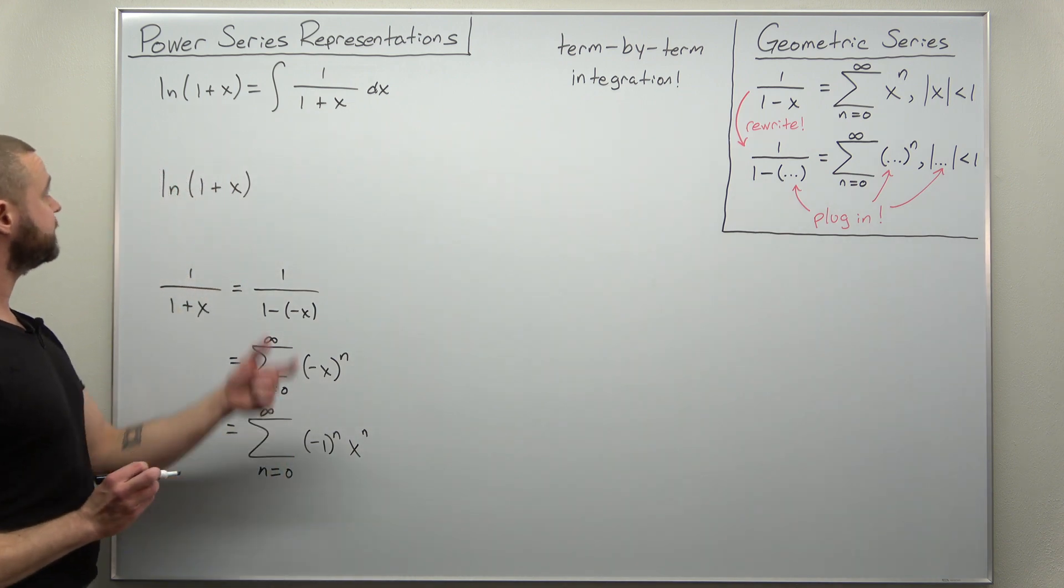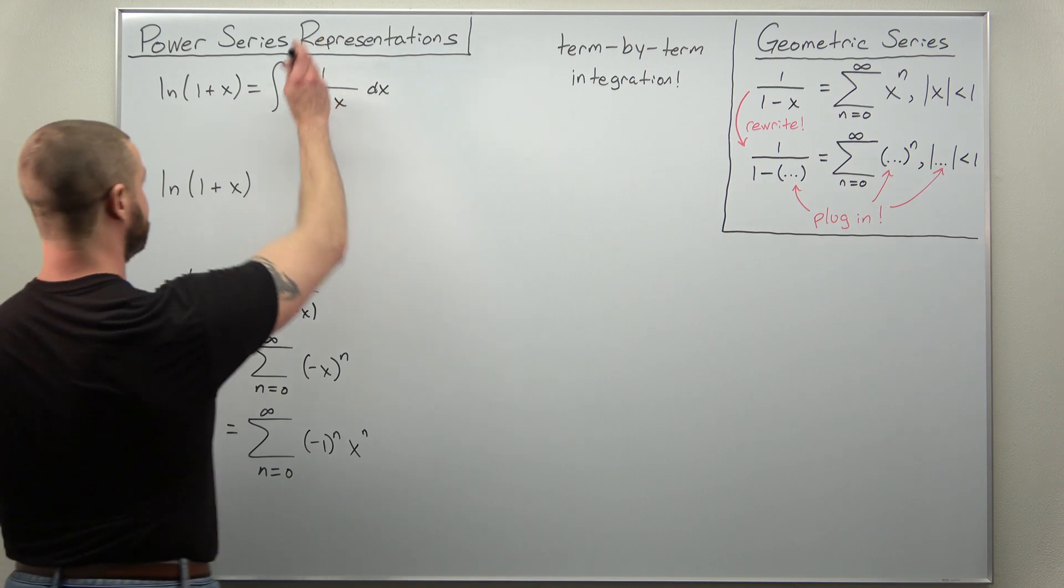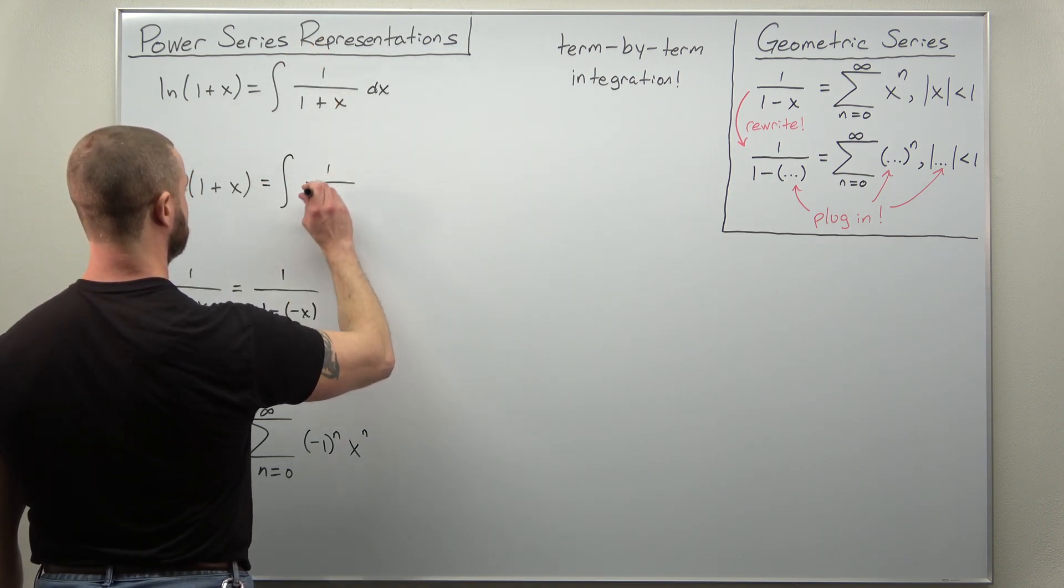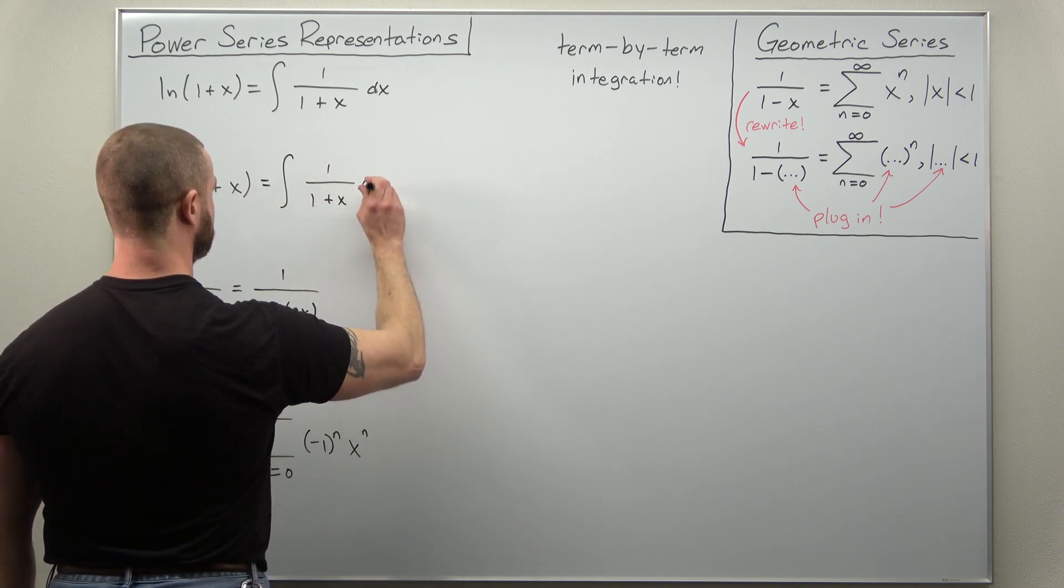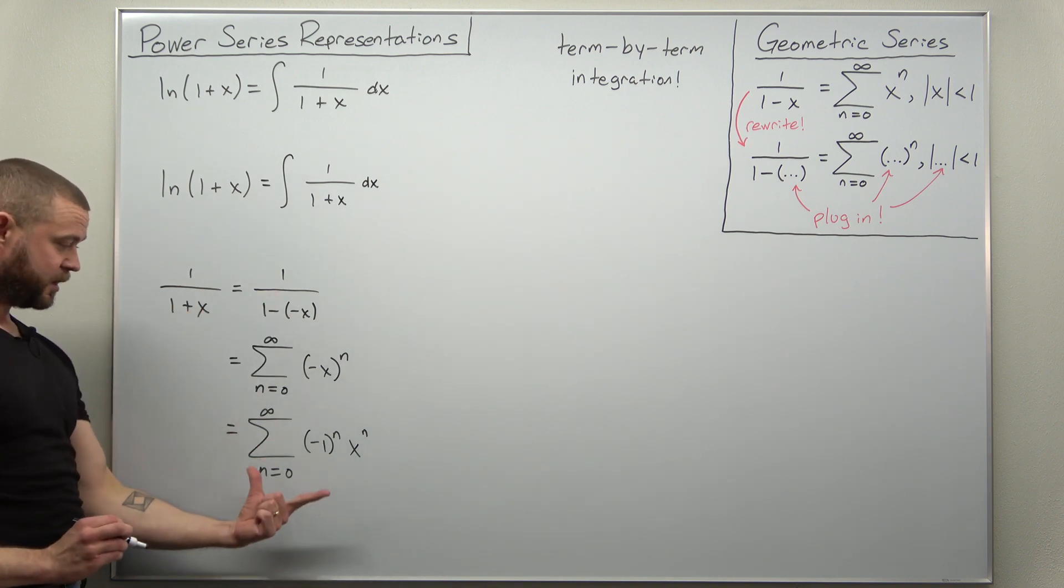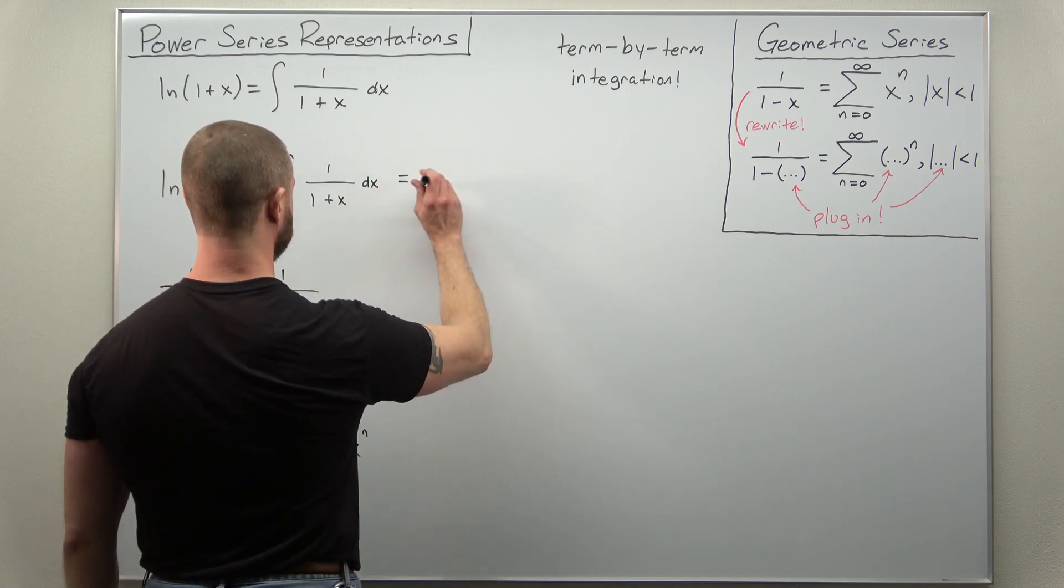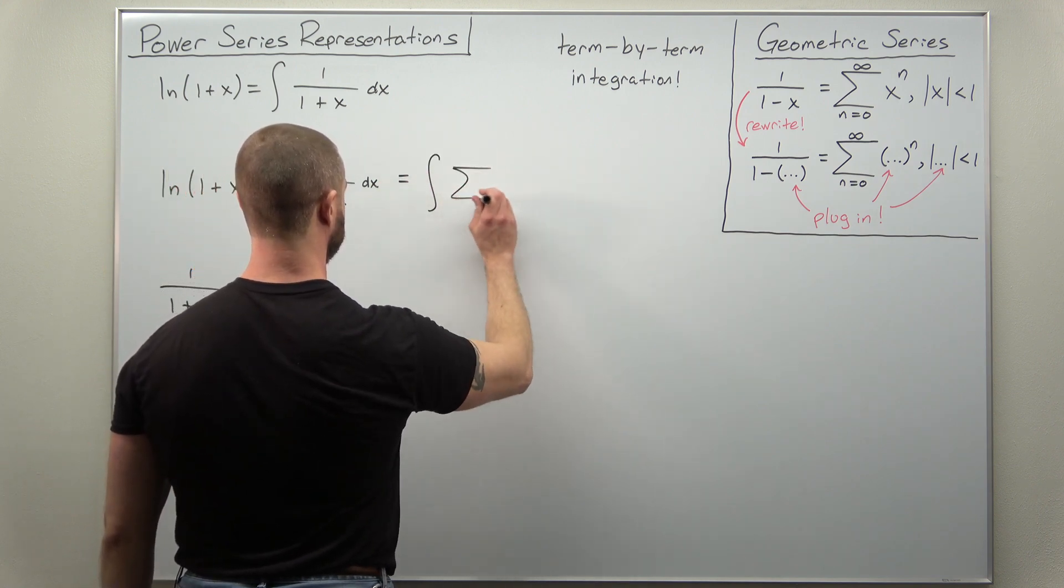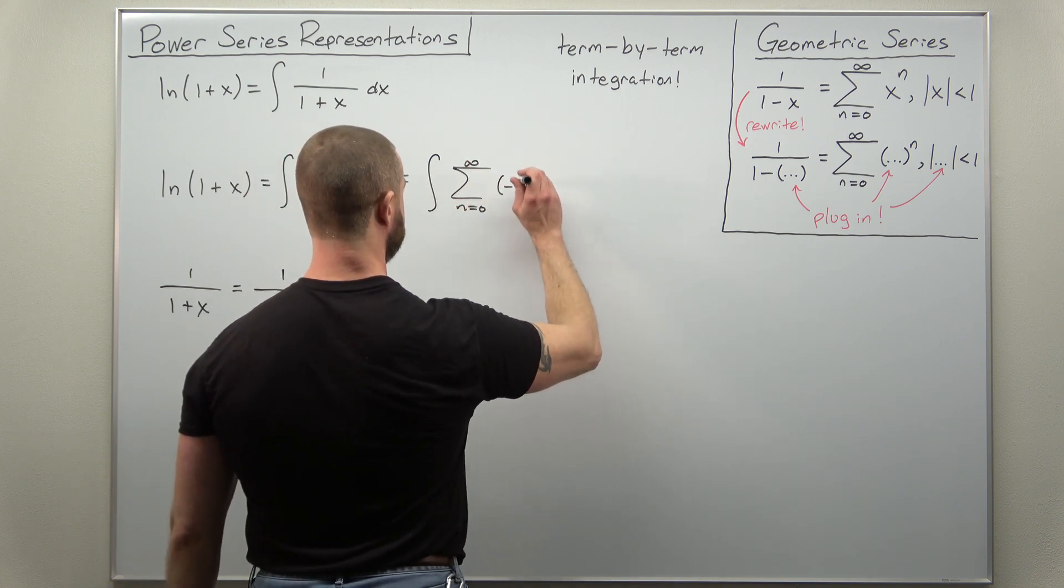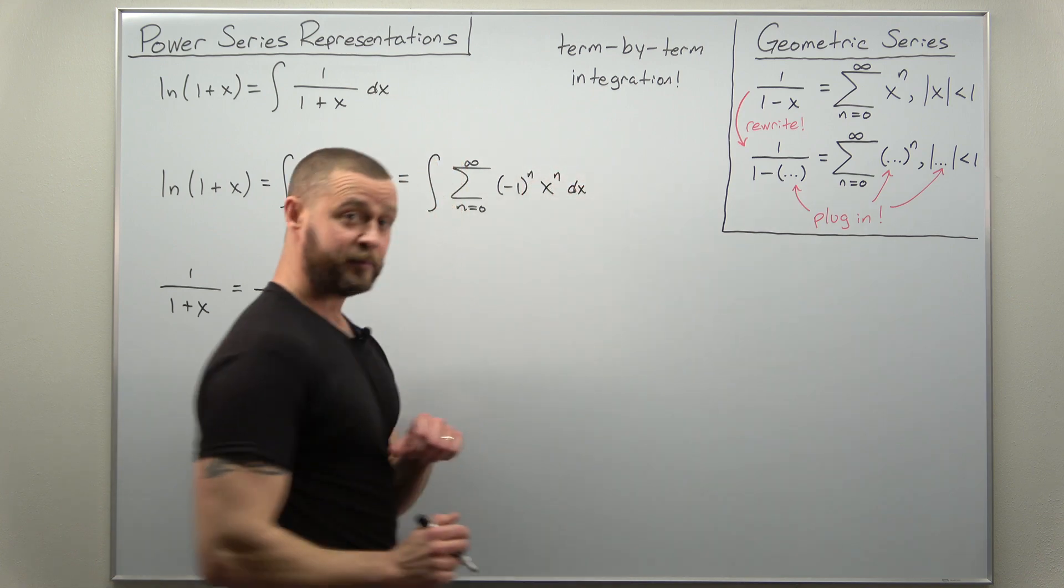So let's connect the pieces here. First, our function, it's the antiderivative of 1 divided by 1 plus x. I'm just going to copy that down right here. Second step, we're going to take that function that we're integrating, replace it with its power series representation. And that term is negative 1 to the n times x to the n.